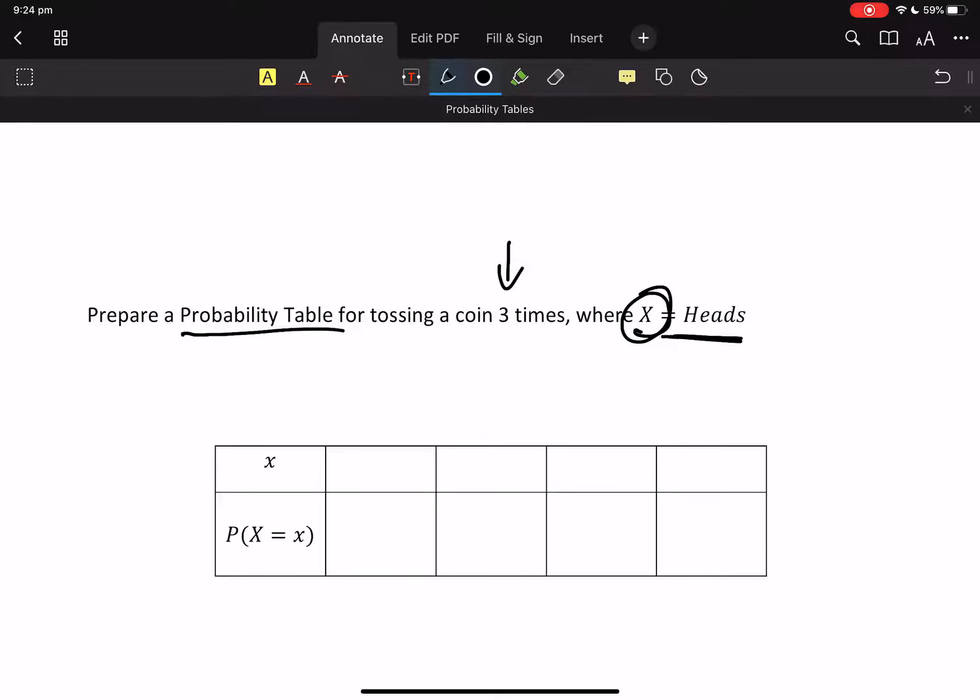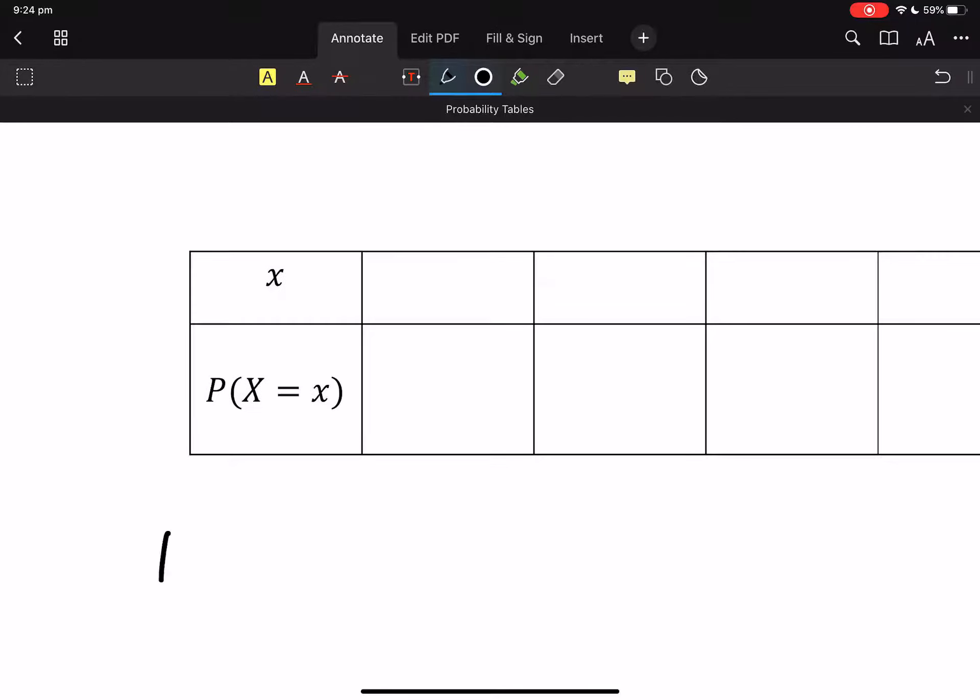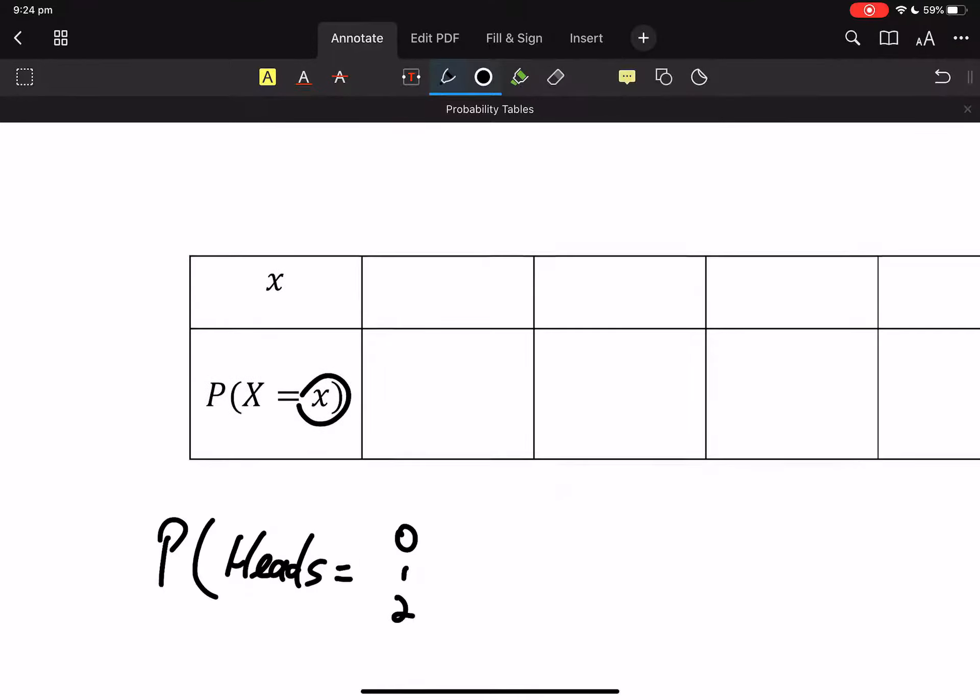So we're thinking the probability of heads equals the small x. Well if I'm throwing it three times it could be zero, one or two. How many times am I throwing it? Three times.